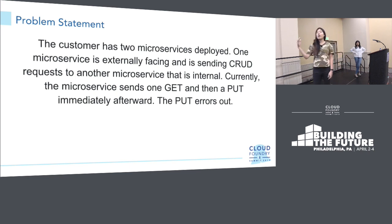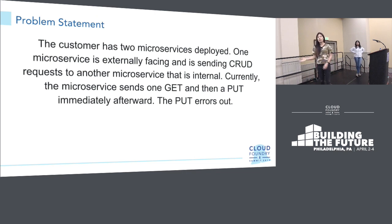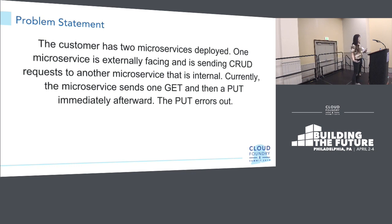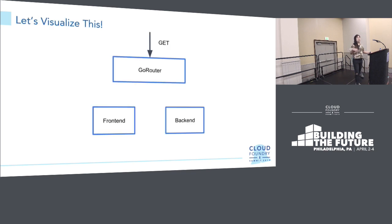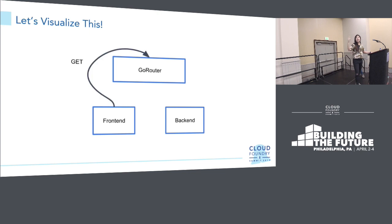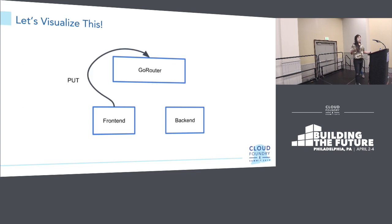In this case the problem was that the customer had two microservices deployed in their Cloud Foundry application. One microservice was externally facing and sending CRUD requests to another microservice acting as a backend. The front-end microservice would send a GET request and then immediately follow up with a PUT request. The GET request would always succeed and the PUT would consistently error out. Let's visualize this: the GET request comes in, hits the go router, gets forwarded to the front-end application, which hairpins back out through the go router to the backend. The GET would succeed, information would be sent back, and then the PUT request immediately following would error.